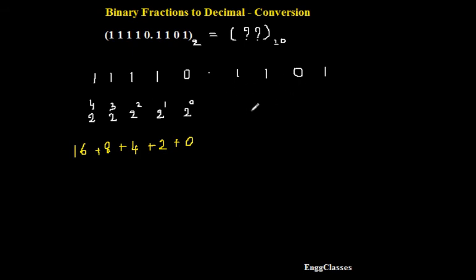Now after the fractional point, what am I going to get? I will multiply the first number with 2 to the power minus 1. To the left I will multiply the numbers with positive multiples of 2 to the power 0, 1, 2, 3 and so on. Here I will consider negative powers of 2. First it is 2 to the power minus 1, this with 2 to the power minus 2, this with 2 to the power minus 3, and this with 2 to the power minus 4.